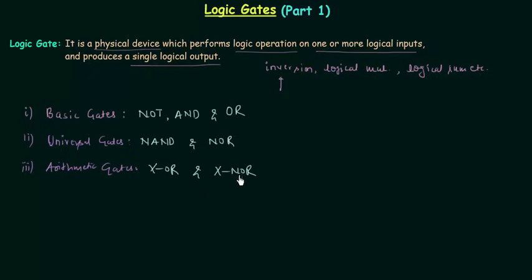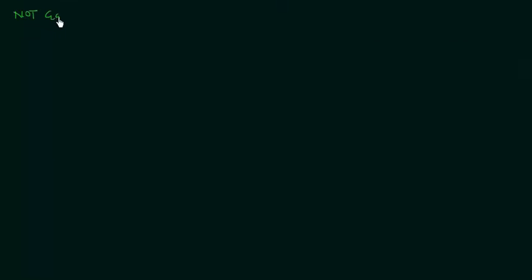We will discuss all these gates one by one, and in this presentation we will start with NOT gate. This is a very important presentation because we are going to discuss some very important problems. Most of you already know what is NOT gate, how it is represented, and what is the truth table for NOT gate. But the important thing is the problems — I am going to discuss some problems which appeared in IES and GATE exams. So let's move to NOT gate.